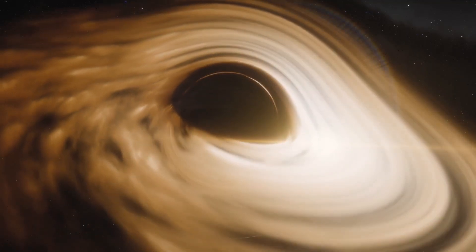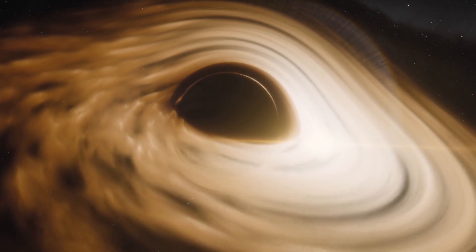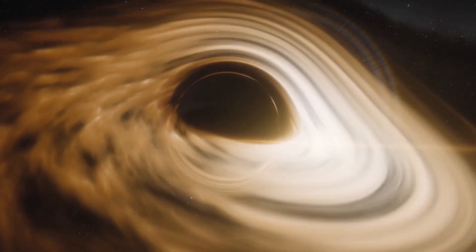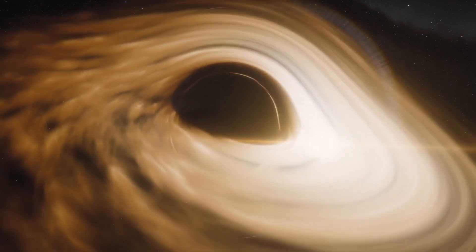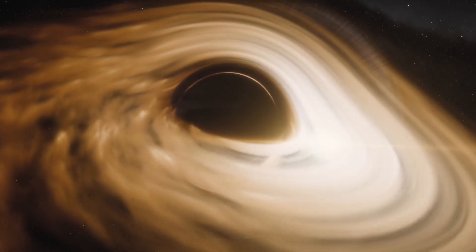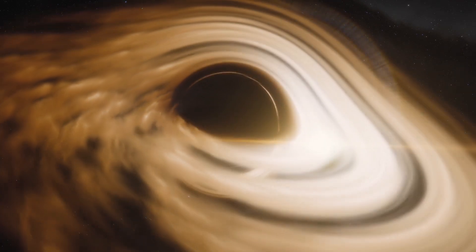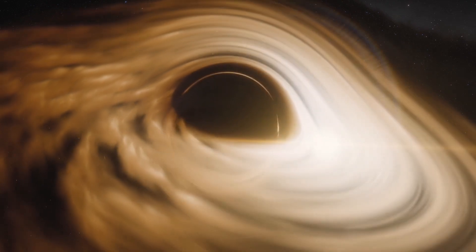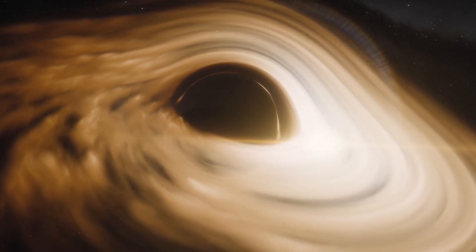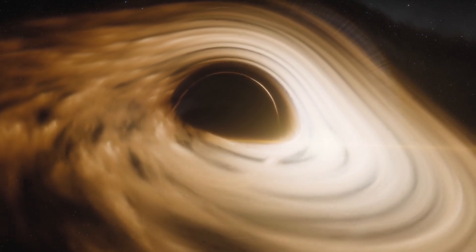Accretion disk formation. As the protostar forms, a rotating disk of gas and dust called an accretion disk also forms around it. The material in the accretion disk slowly swirls inward, falling into the protostar. This process is similar to how water spirals down a drain.